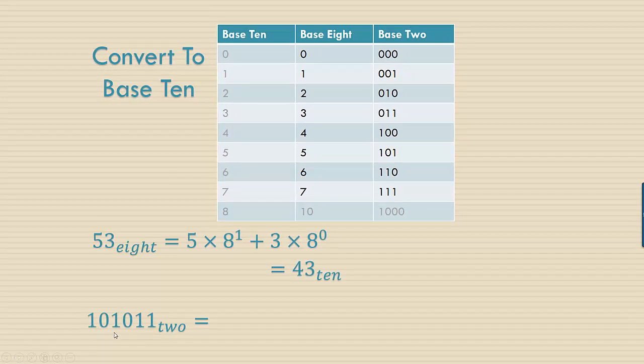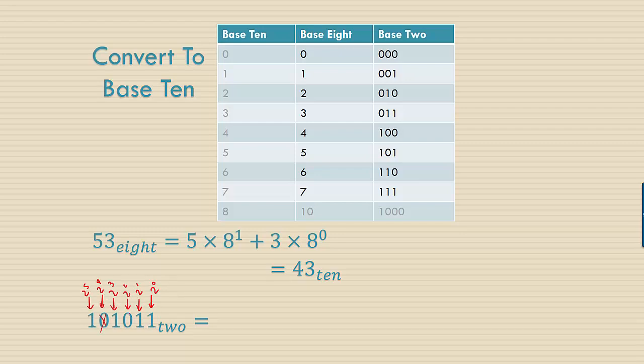Now let's convert 101011 base 2 to base 10. Again, since this is base 2, each place value is a power of 2. Now the zeros don't contribute anything because if you multiply anything times 0 you get 0.